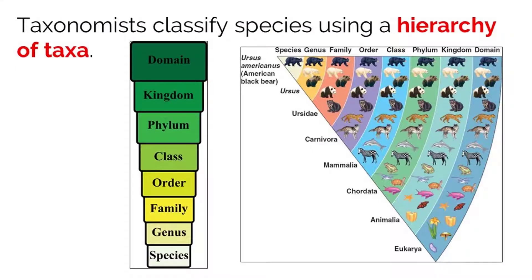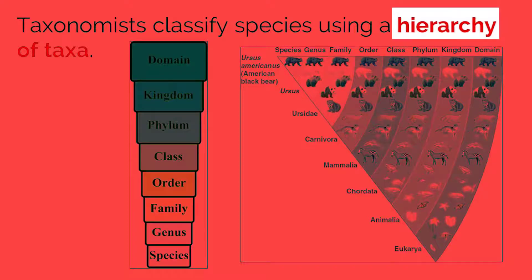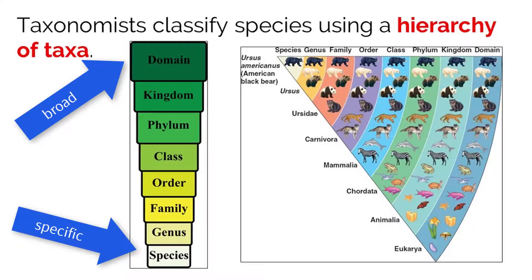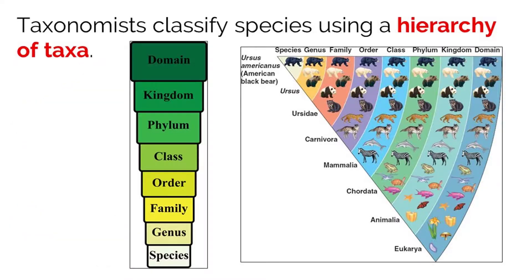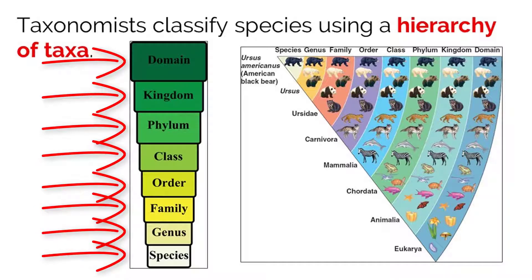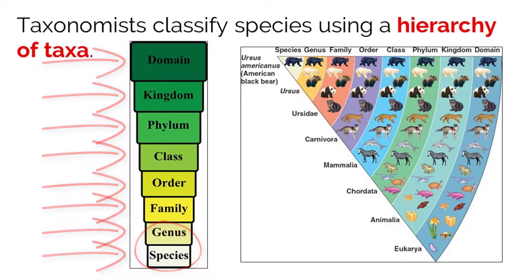Taxonomists correctly classify organisms using a hierarchy system, which operates from the broadest to the most specific level. In order from broad to specific, the classification hierarchy starts with one of the three domains, and then moves down through kingdom, phylum, class, order, family, genus, and finally species. Once an organism is classified, the scientific name is created using the genus and species names from the most specific levels.